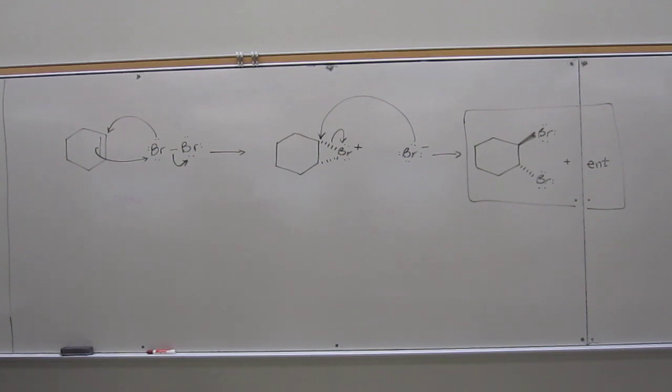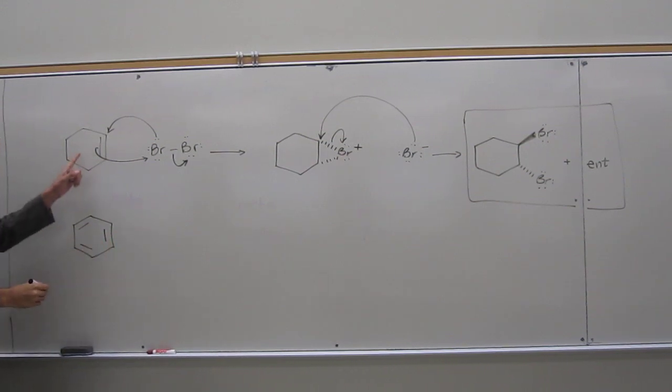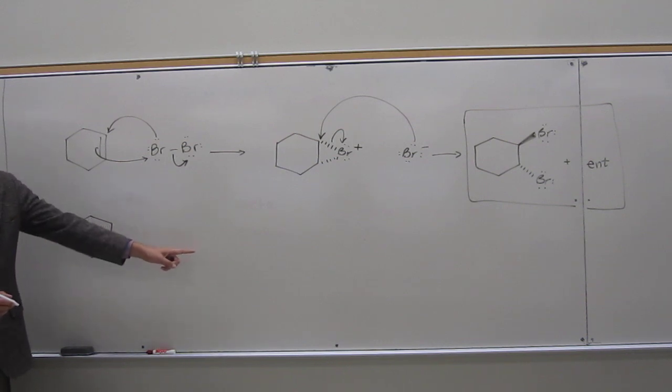And if we compare that to the reaction of benzene. This is cyclohexene, right? If this was cyclohexatriene, we would expect to be one, two bromines there, one, two bromines there, one, two bromines there.